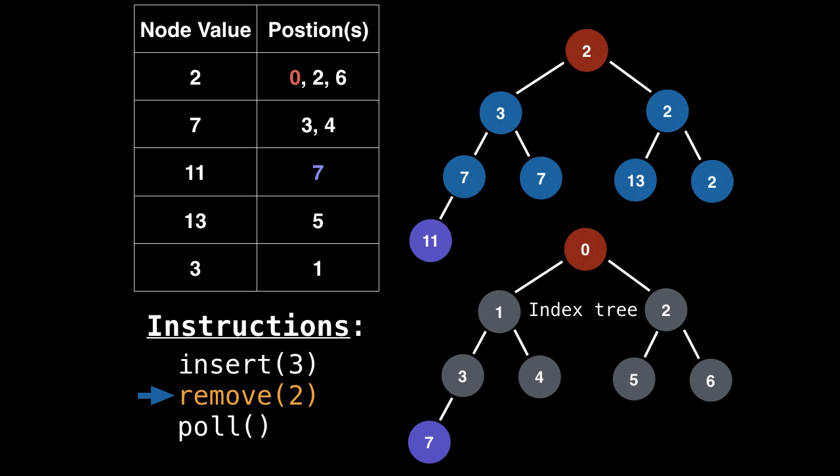So how do we remove a node again? So we did a lookup. So we didn't have to do that linear scan, which was nice. And now we swap it with the end, the last node, which happens to be 11. We remove the last node. Now we need to satisfy the heap invariant. So we need to bubble down 11.